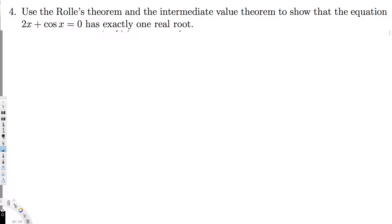First, we use the Intermediate Value Theorem. To prove this using the IVT, we have to show that the equation has a value below zero and above zero. If it has a value below zero and above zero, that means it has exactly one real root between them.